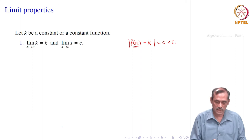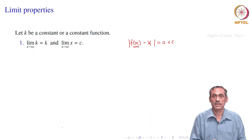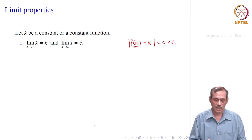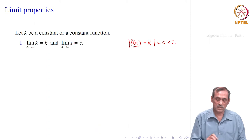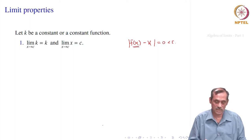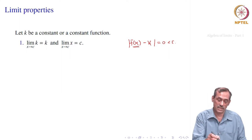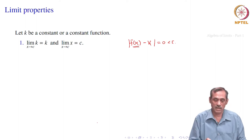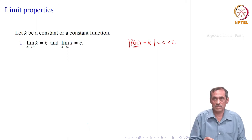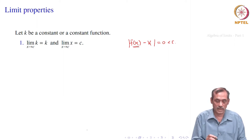The second result says that the limit of the identity function equals c as x goes to c. This is the function f of x equal to x. We choose delta equal to epsilon. Whenever x minus c mod is less than epsilon, the functional value is x itself, so x minus c mod is also less than epsilon. Hence, limit of x is equal to c. We had seen this earlier, and also for x squared.